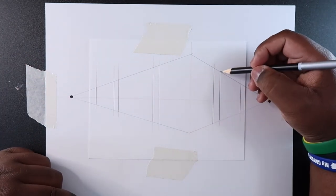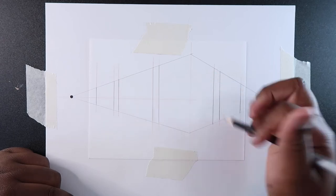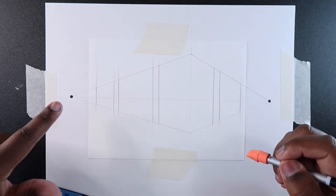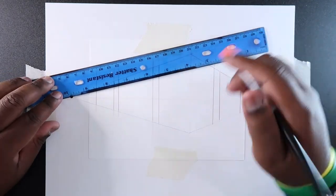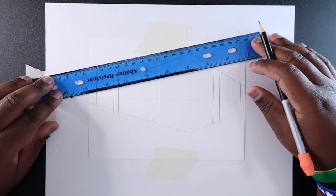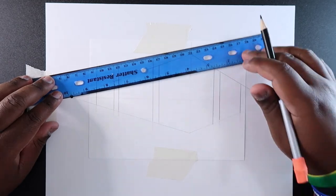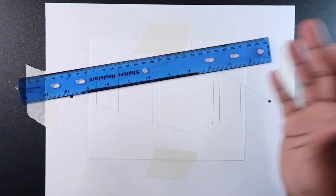That's where this other vanishing point comes in place. We're going to take our long ruler and connect this vanishing point over here to this spot up here. That way we won't end up drawing this line anywhere or at any angle.